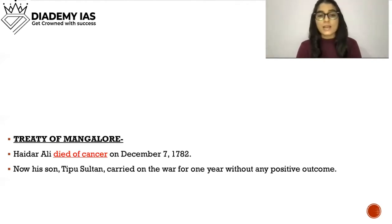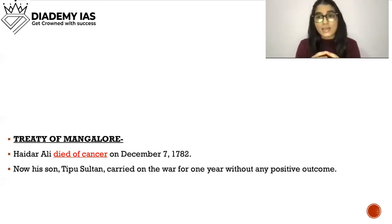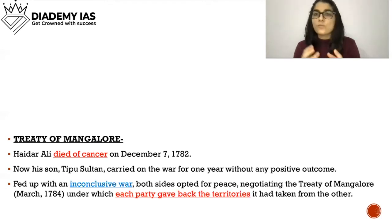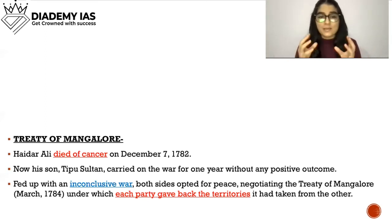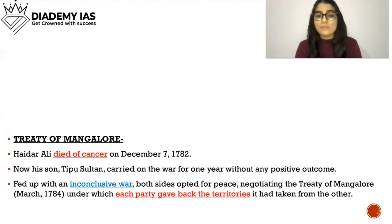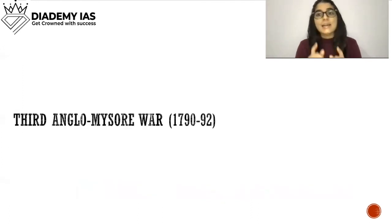Hyder Ali died of cancer during the war. His son Tipu Sultan carried on the war for one year without any positive outcome. Both sides were fed up and signed the Treaty of Mangalore, under which each party gave back the territories it had taken from the other. This concluded the Second Anglo-Mysore War.